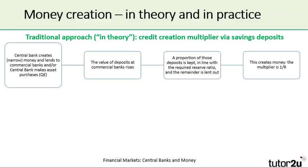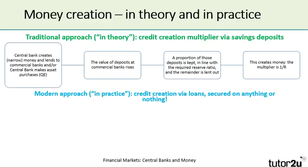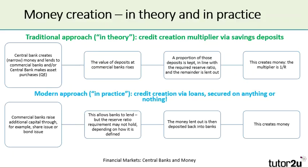The money multiplier is 1 over R, where R is the reserve ratio. That's the traditional view and still the main way money is created, but certainly not the only way. Commercial banks don't have to wait for the central bank to create money — they can raise additional capital by issuing shares or bonds, which then allows them to lend. The process is exactly the same from that point. The key point is that the central bank doesn't have to initially create the money.